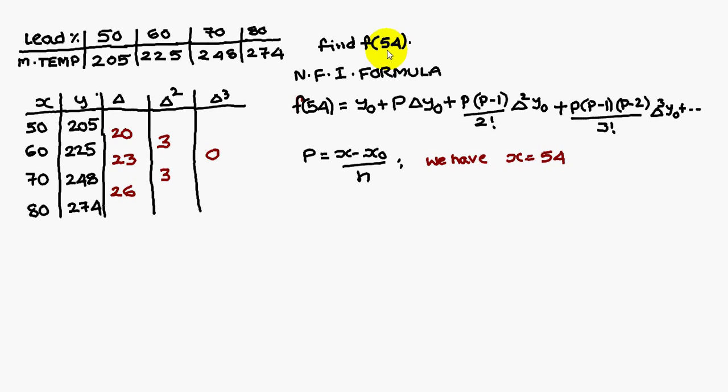We have x, x is for 54 we have to find out. Therefore x is 54, x₀ means the starting value, x₀ is 50. Similarly this is y₀, the corresponding value of x₀ is y₀.